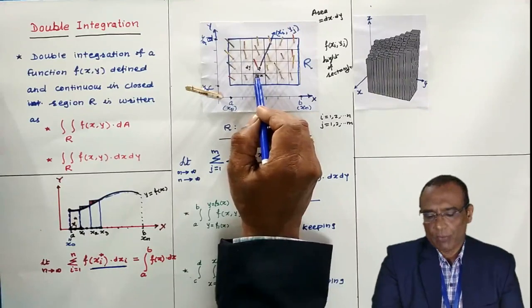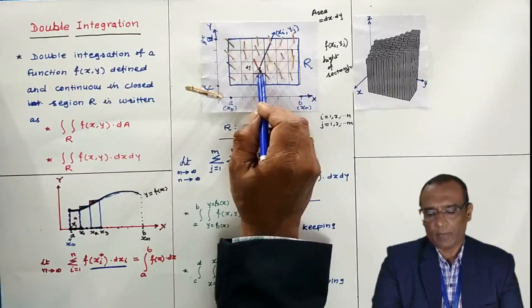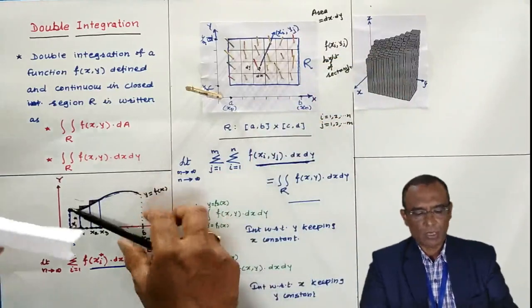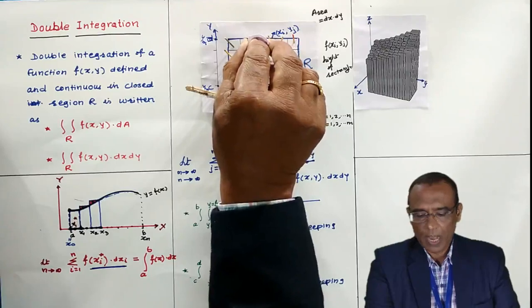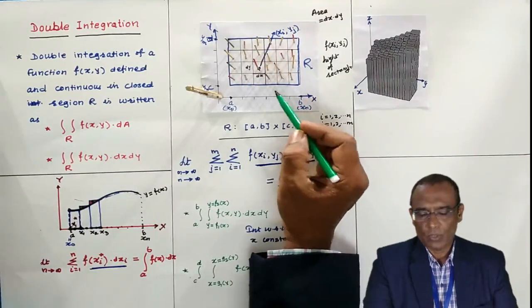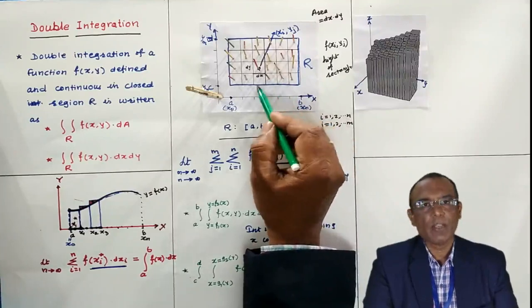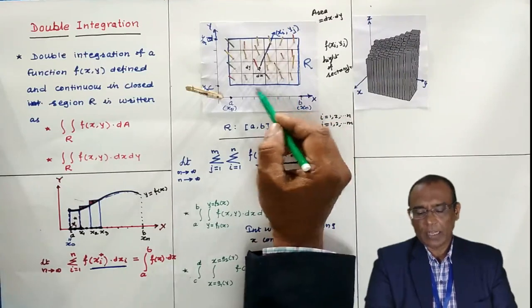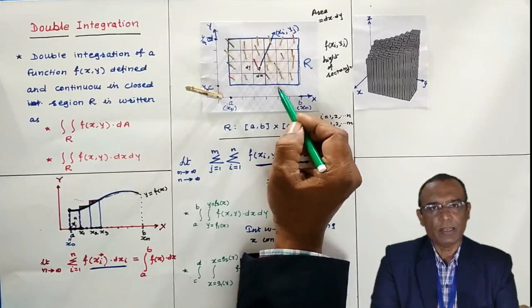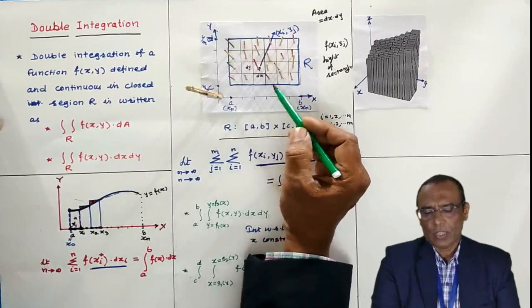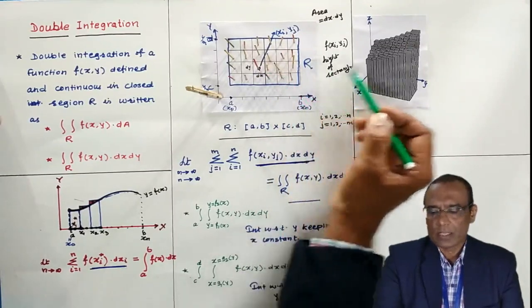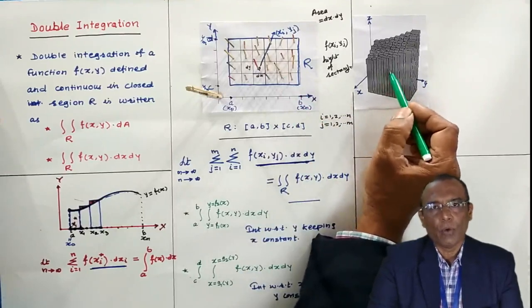Each stick represents a rectangular box erected on a small grid. In each grid, I take a point (xi, yj) and place a stick there. There can be 1 lakh or more sticks because the grid size is very, very small. If you accumulate the volume of all these sticks, you get a structure representing the volume under the surface — and that is what we want.